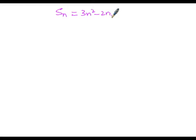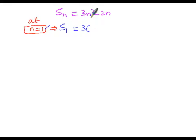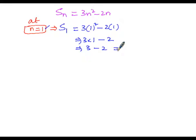Substituting n=1: S(1) = 3 × 1² - 2 × 1 = 3 - 2 = 1. So S(1) equals 1.